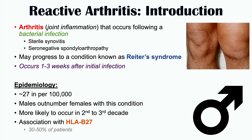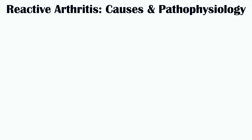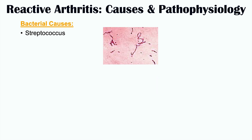This HLA-B27 association is very significant — 30 to 50 percent of patients who have reactive arthritis actually have HLA-B27. In terms of causes and pathophysiology, some of the bacteria involved include Streptococcus. Having a streptococcal infection can lead to reactive arthritis occurring after the infection has resolved.